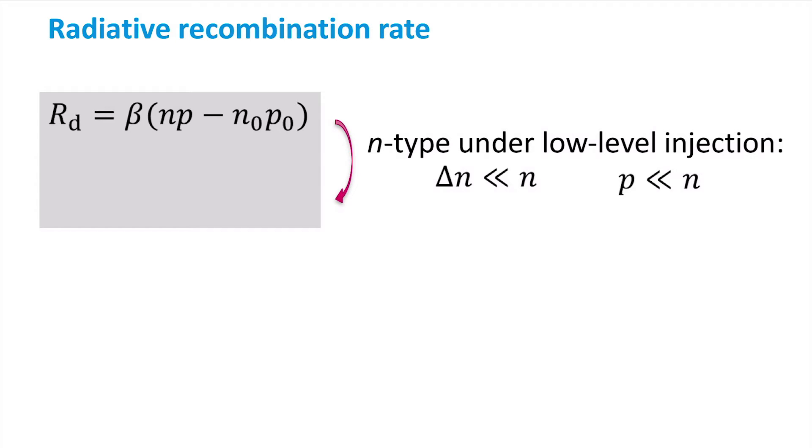Additionally, the concentration of holes is much lower than the concentration of electrons, as electrons are the majority charge carriers and holes are the minority charge carriers in this N-type material.